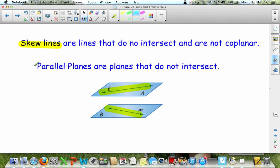And parallel planes are planes that do not intersect. So these planes, A and B, will not intersect each other. And therefore, they are parallel planes.